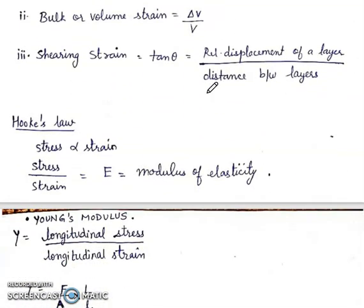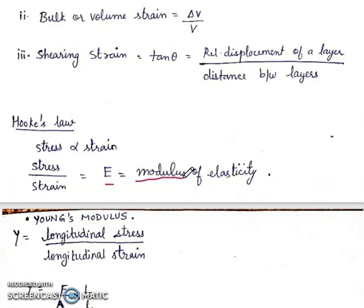Hooke's law: According to Hooke's law, stress is directly proportional to strain. Stress upon strain is equal to a constant E, where E is the modulus of elasticity.